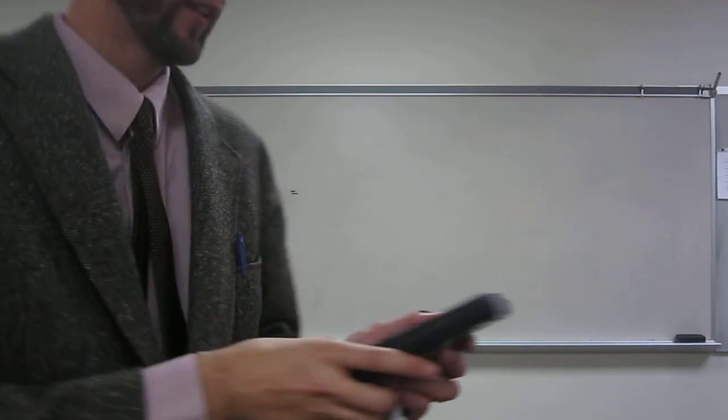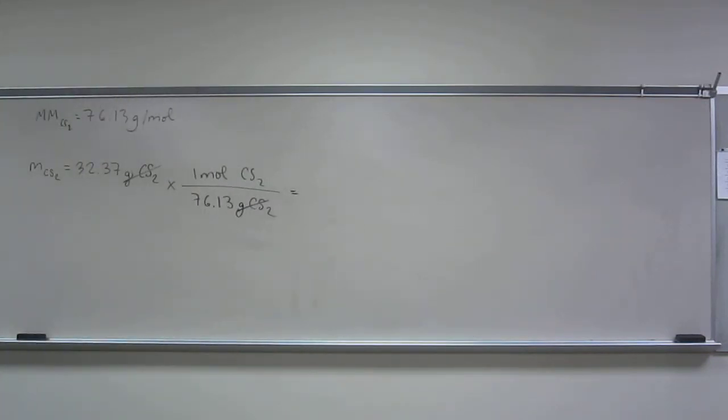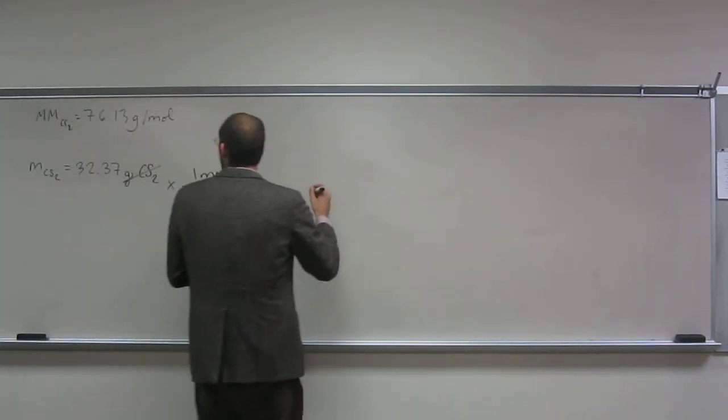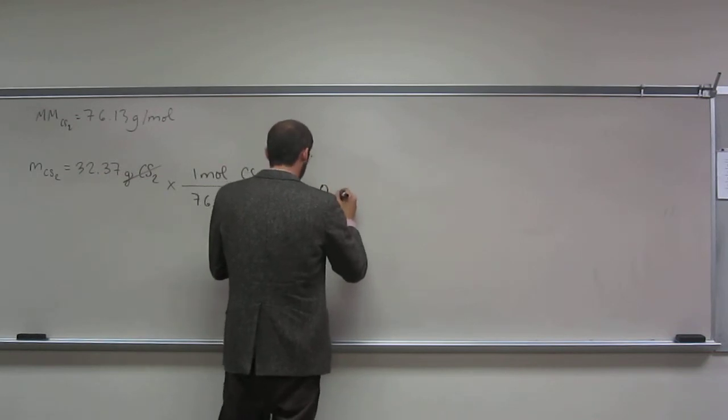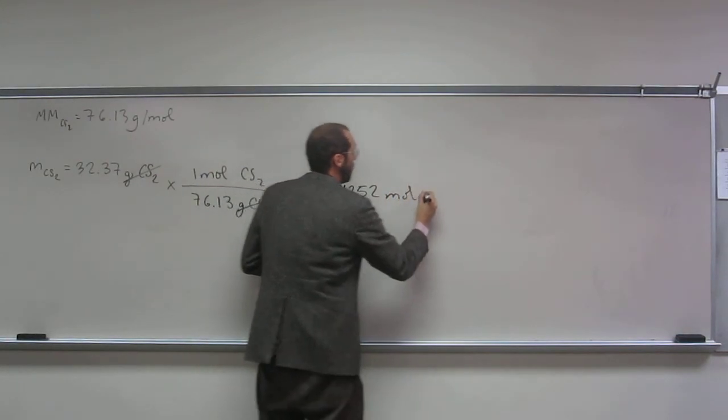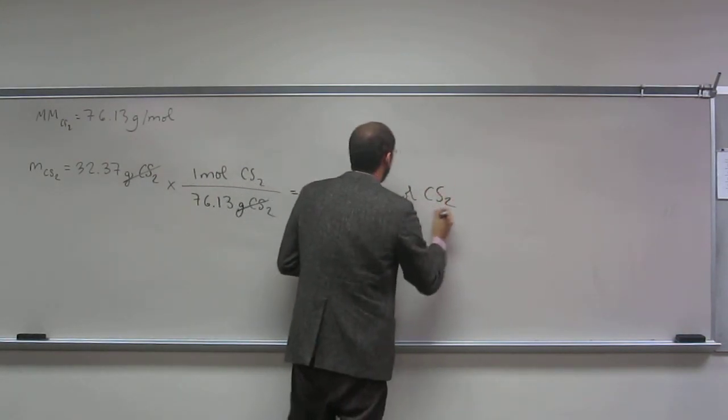My calculator. 32.37 divided by 76.13. So I got 0.4252 moles of carbon disulfide.